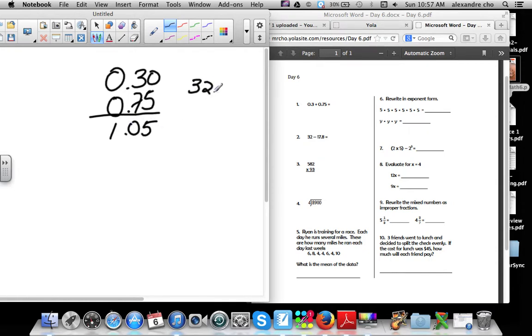32 doesn't have a decimal so add one, and you're subtracting them by 17.8. Add a zero on top because it's necessary, subtract. You need to do a little borrowing. This becomes 11, this becomes a 10. 10 minus 8 is 2, 11 minus 7 is 4, and 2 minus 1 is 1. Finalized for 14.2. 3 is: